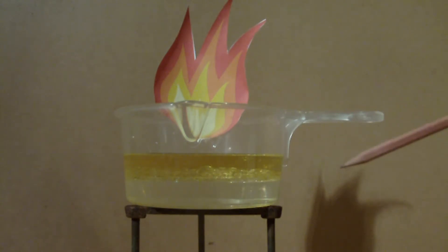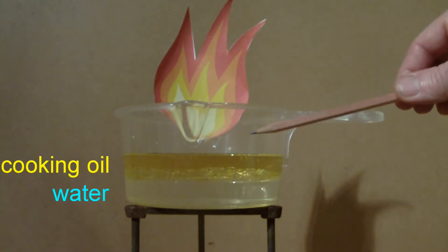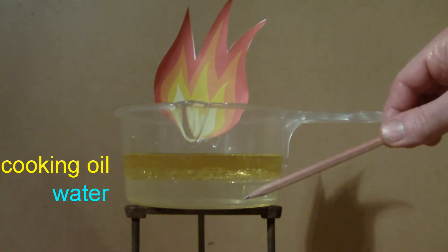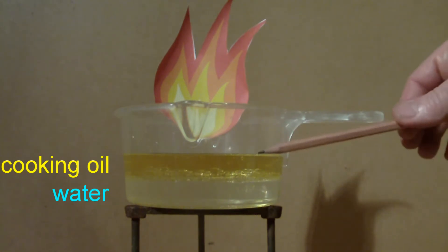Now, you'll notice that instead of smothering the oil, the water sinks to the bottom of the pan. The reason why that happens is because water has a higher density than oil. In other words, oil floats on top of water.